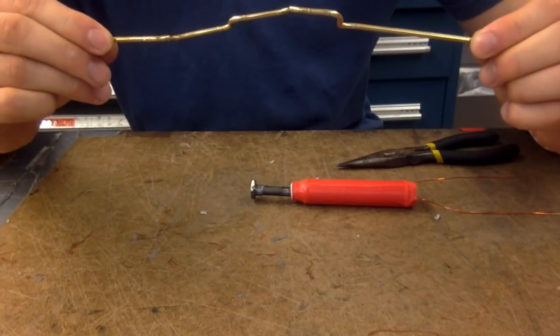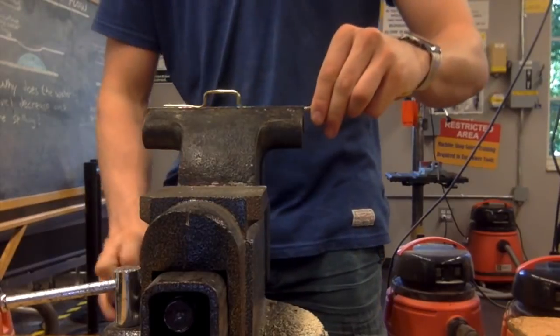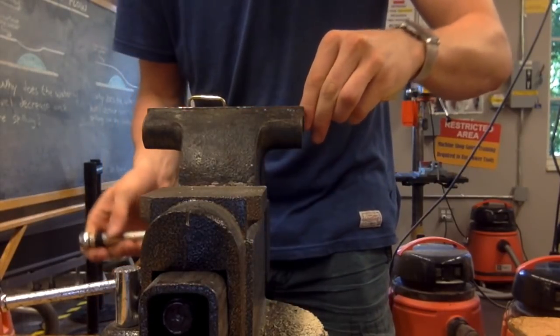After some bending, the crankshaft looks alright from the front, but a bit wonky from the side. To try and fix this, I clamp it into the vise and add some force.